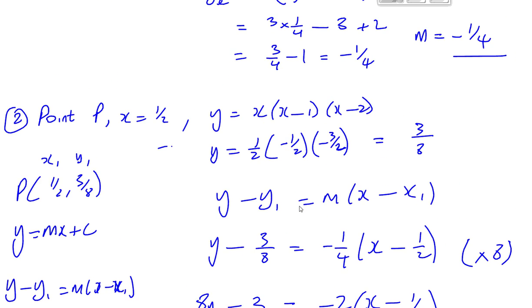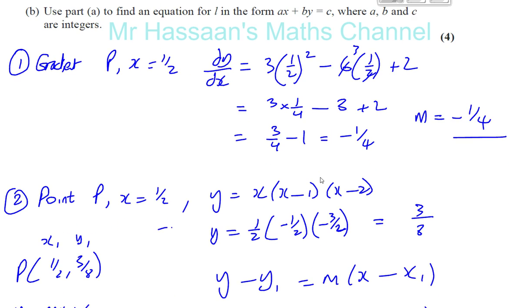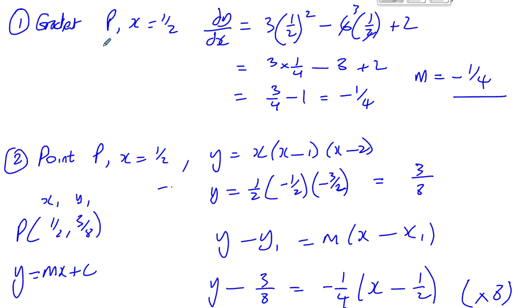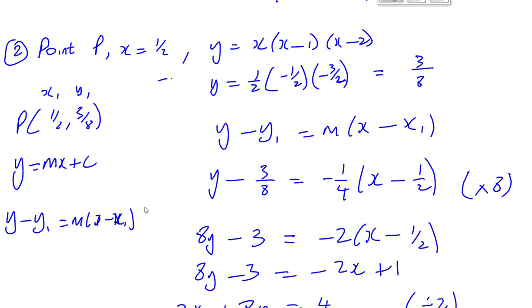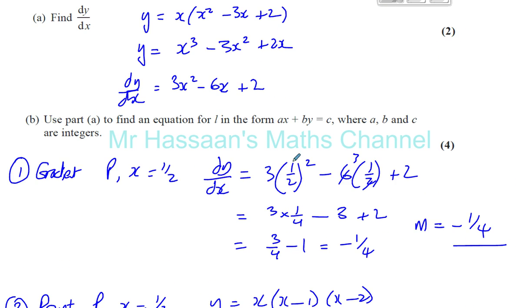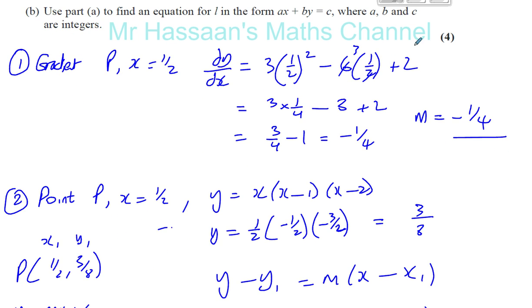And there we have our equation of our straight line, which is in the form required, which is a tangent which has the same gradient of the curve at point P. So I hope that was clear, and I'll go on to the next part of the question in the next video. Thank you for watching.